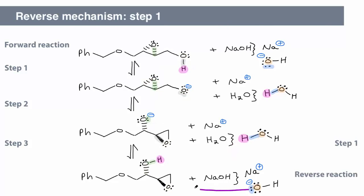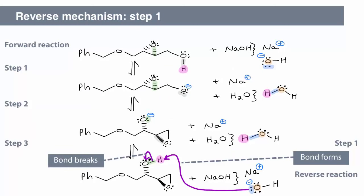In the first step, an OH bond forms, while another OH bond breaks, making water and an alkoxide, oxygen with a negative charge.